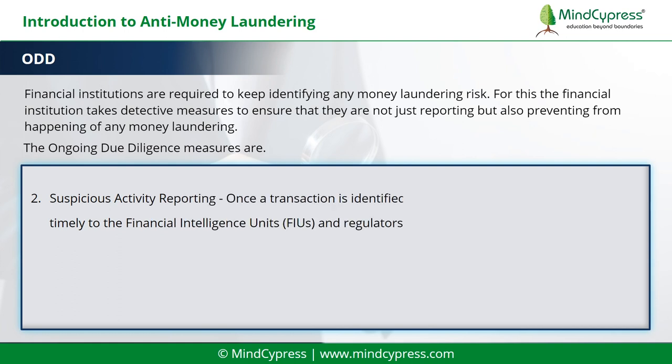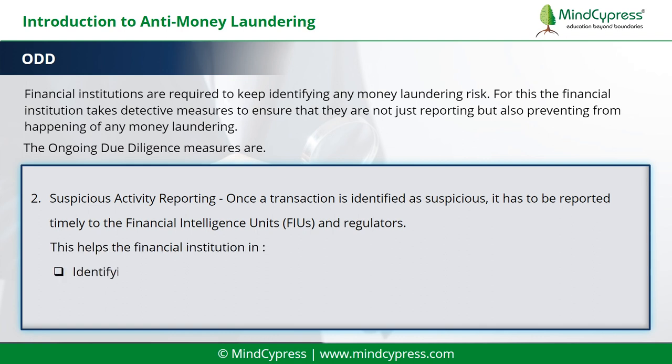2. Suspicious activity reporting — once a transaction is identified as suspicious, it has to be reported timely to the financial intelligence units (FIU) and regulators. This helps the financial institution in identifying higher-risk customers and evaluating effectiveness of controls.